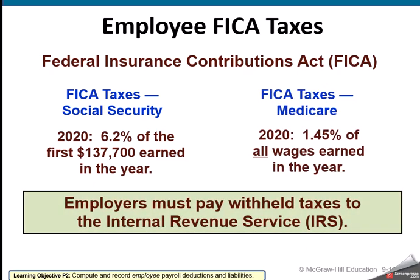If you go on to take payroll accounting, you'll get into the nitty-gritty of all these different payroll taxes. Social Security is 6.2% of the first — and this is an old rate; currently it's up to about $142,800. But that would be the 2020 rate, so you always have to look at what year we're talking about. Up until that earnings limit, the employee pays 6.2% and the employer matches at 6.2%.